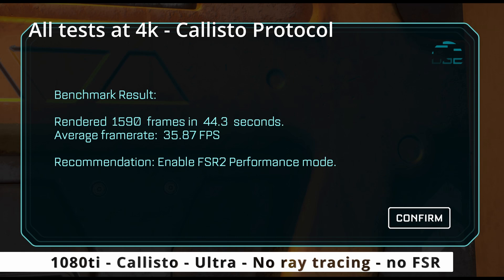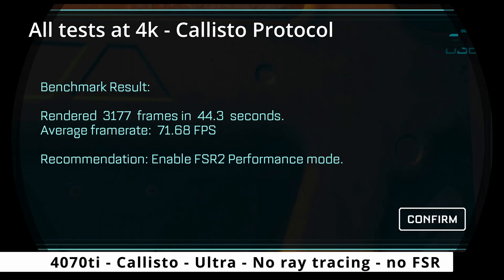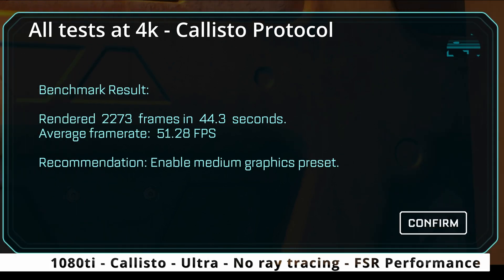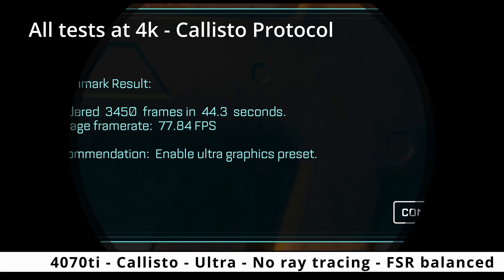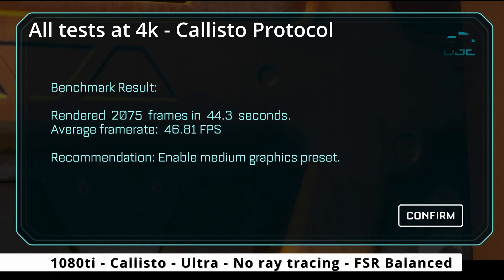Moving on to the Callisto Protocol benchmark. 1080 Ti, Ultra Preset, no Ray Tracing, no FSR: 35.87 FPS. On the 4070, same settings: 71.68 FPS. Unfortunately this benchmark doesn't show us lows. No Ray Tracing but with FSR Performance on the 1080 Ti — best-case scenario at Ultra Preset — it's 51 FPS. We moved over to Balanced on the 4070: 77.84 FPS, and the 1080 Ti on Balanced is 46.81 FPS.